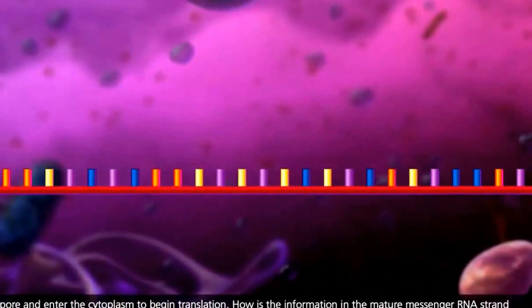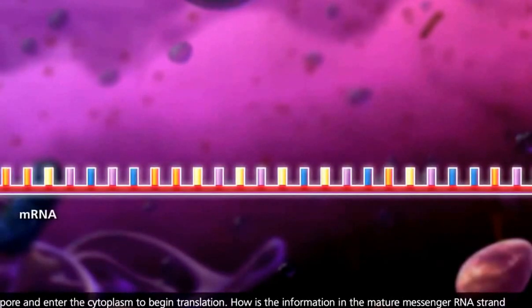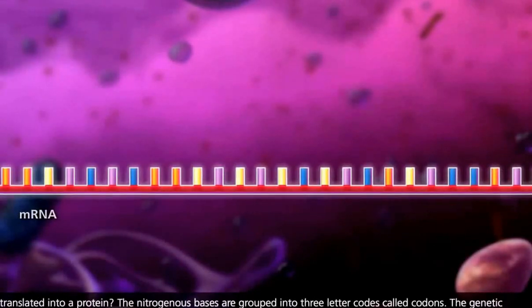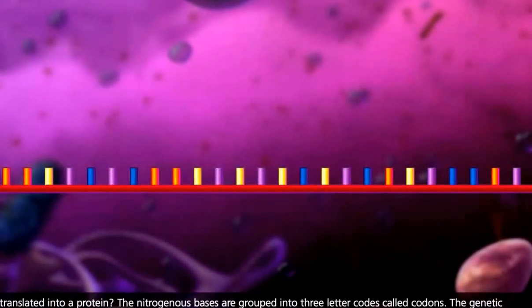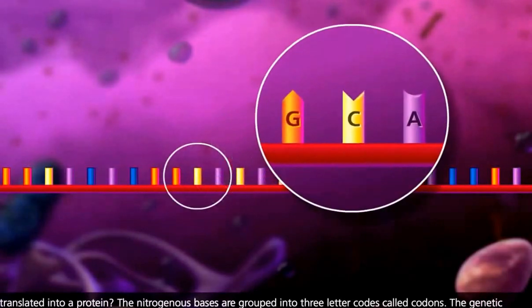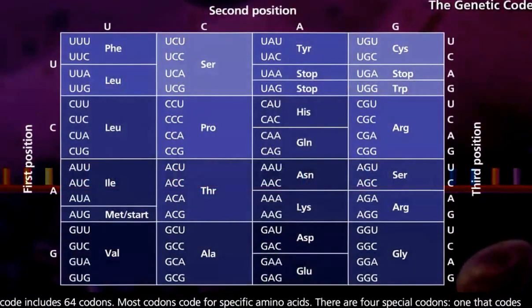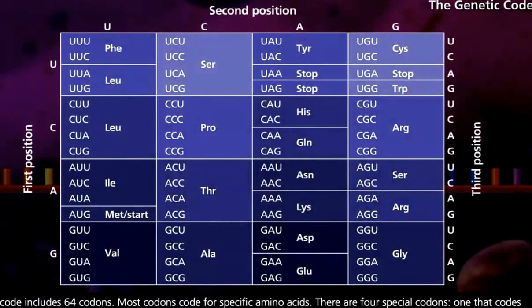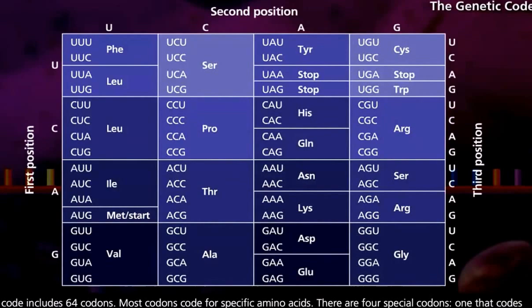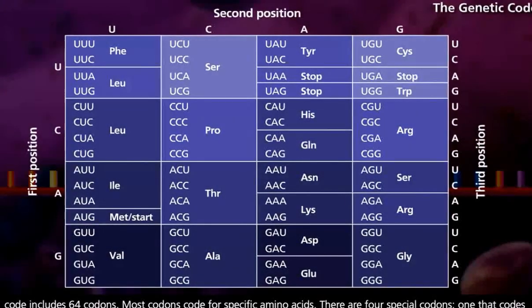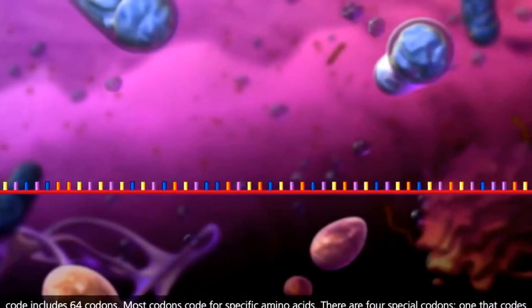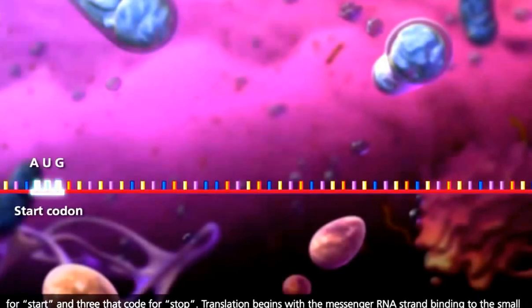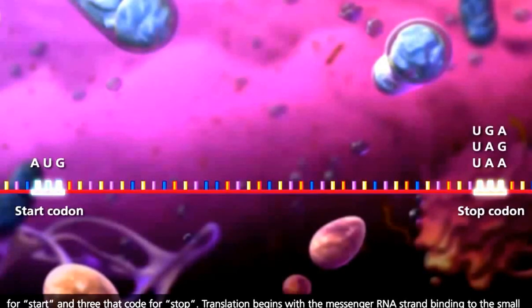How is the information in the mature messenger RNA strand translated into a protein? The nitrogenous bases are grouped into three-letter codes called codons. The genetic code includes 64 codons. Most codons code for specific amino acids. There are four special codons: one that codes for start and three that code for stop.